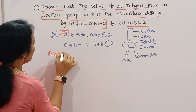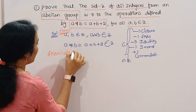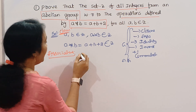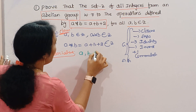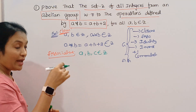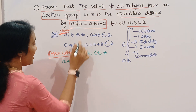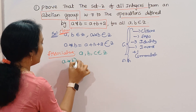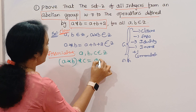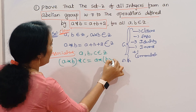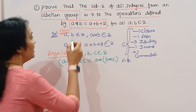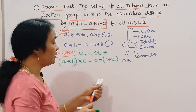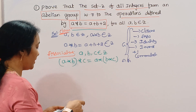Next, associative. We will check the associative property. For A, B, C belonging to Z: A star (B star C) equal to (A star B) star C. Now taking LHS, the result is equal to RHS. It holds the associative law.